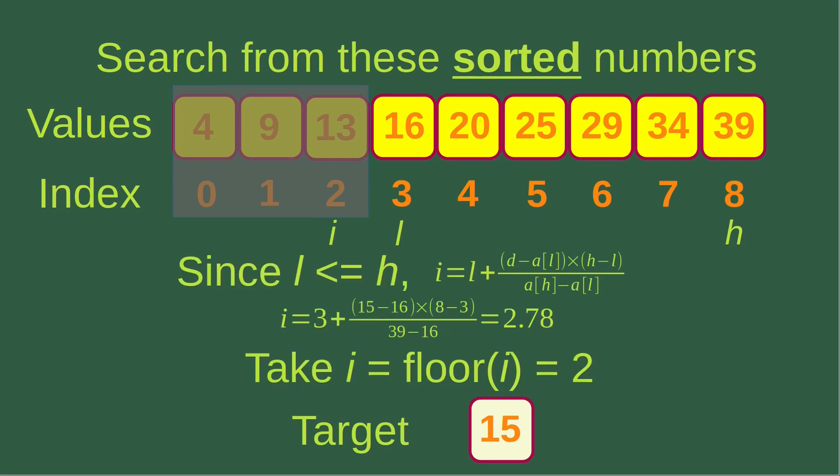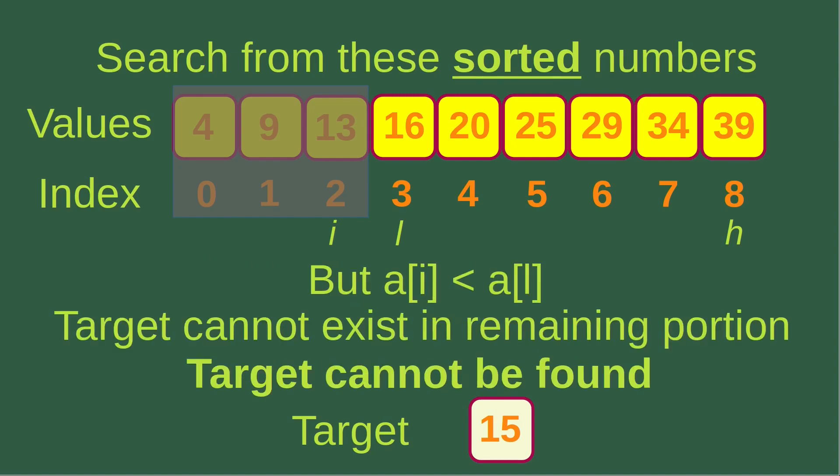Now since l = 3 is still smaller than or equal to h = 8, I use the formula to find i again — i = 2.78. Since it is not an integer, I take the floor, giving i = 2. However, a[i] = a[2] is actually smaller than a[l] = a[3]. This means the target cannot be located in the portion of the array to be searched for, so the target cannot exist in the remaining portion of the array. We conclude that the target 15 cannot be found from the given array.